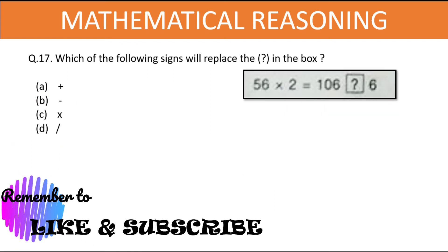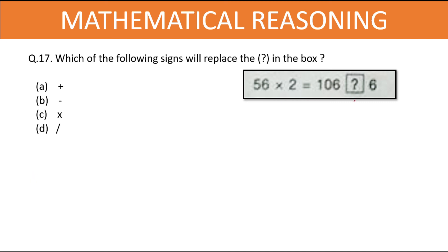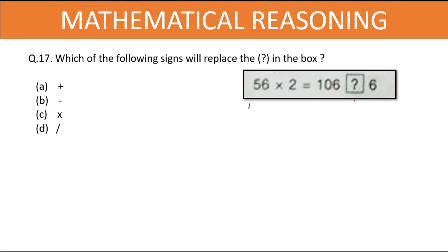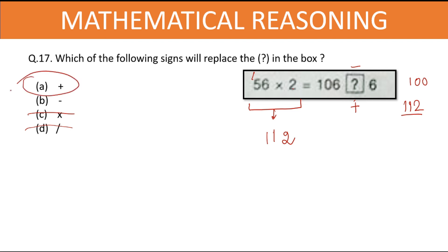Which of the following signs will replace the question mark in the box? First solve 56 times 2: that equals 112. Now equate with 106 and then 6. If multiplication is in the box, the answer would be around 600 — cancel that out. If division, the answer would be far less than 112 — cancel out option D. If subtraction, 106 minus 6 equals 100 — not 112. If addition, 106 plus 6 equals 112. So the right answer is option A — addition.